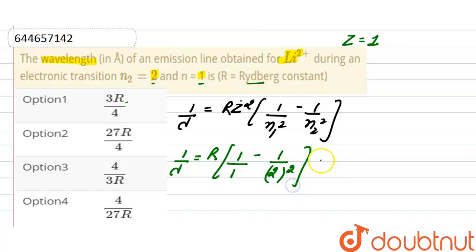So from here, 1 by lambda is equals to R. And this will be 4 into 3. So from here lambda is equals to 4 divided by 3R.